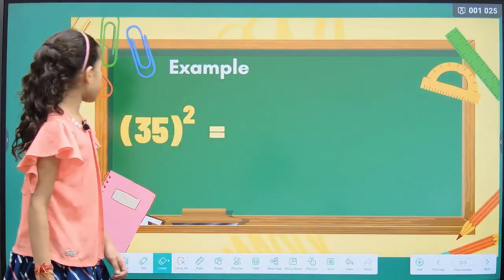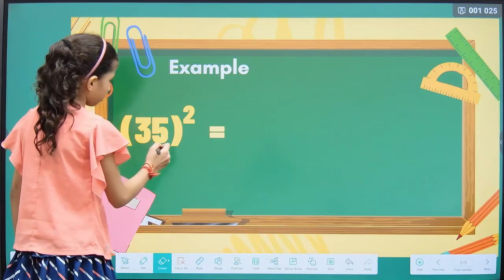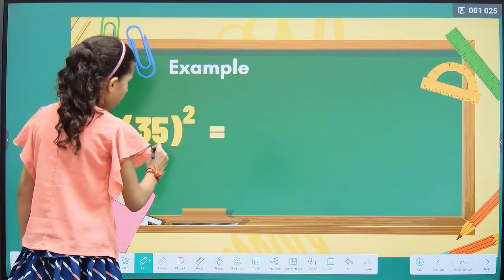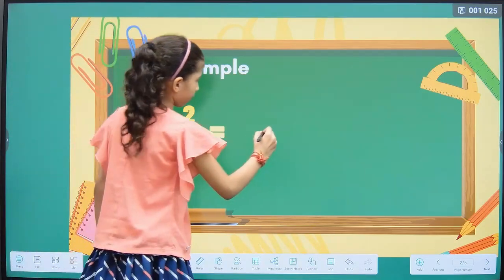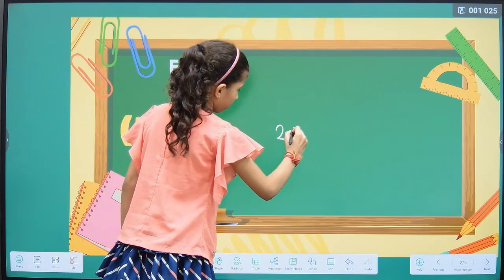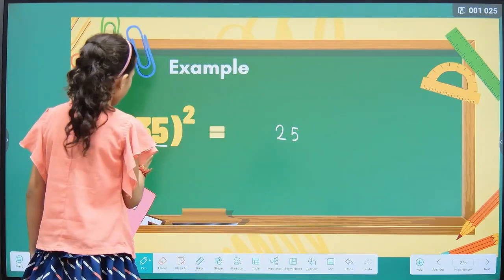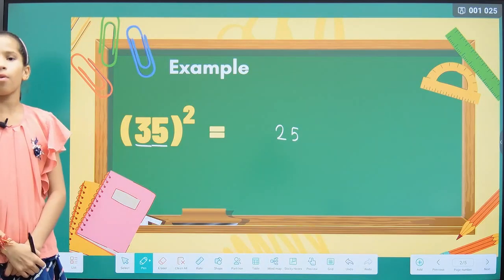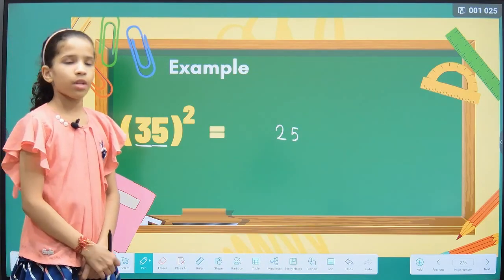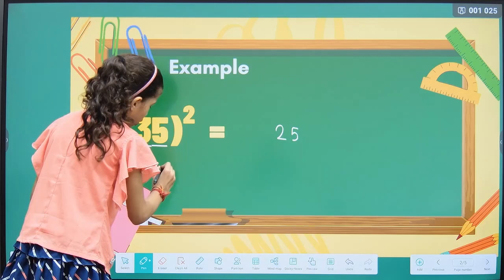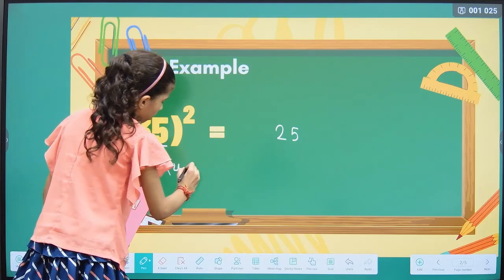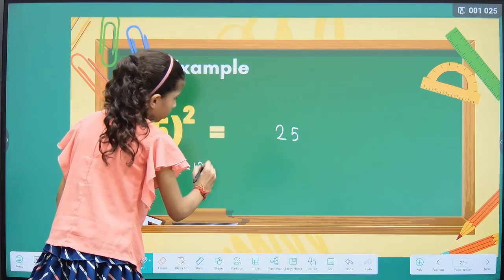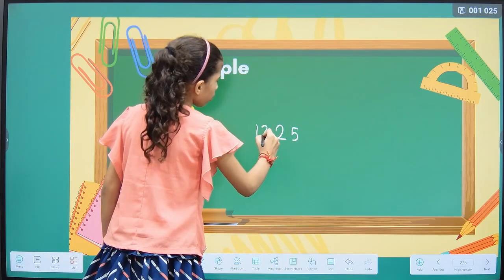The first example is 35. The square of 5 is 25. The rest value is 3. The successive number of 3 is 4. Then we multiply 3 into 4, which equals 12. The answer is 1225.